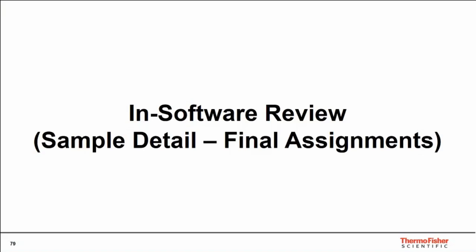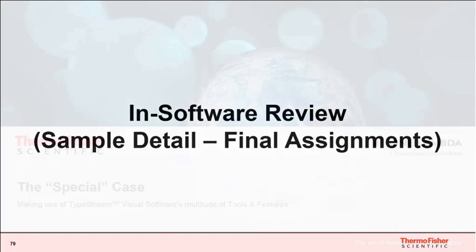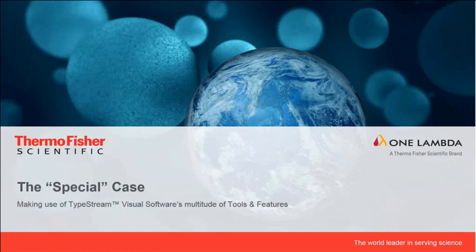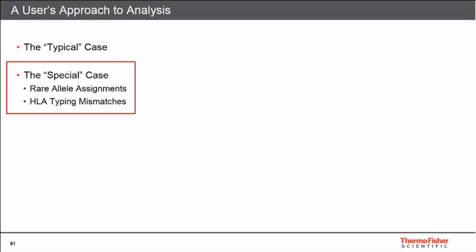All of those steps — starting from the home screen, creating the session, assessing the session from the session summary screen, and reporting out final assignments — represent what a user does in 90 to 95 percent of cases: the typical case. For the special case — five to ten percent of cases — we make use of additional functionality within TypeStream Visual. The two special case scenarios highlighted today are rare allele assignments and scenarios where we have HLA typing mismatches, meaning possibly novel alleles present in our sample.